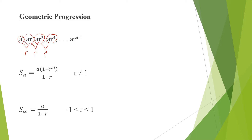In order for us to determine the nth term, our formula is simply: a times r to the power of n minus 1.